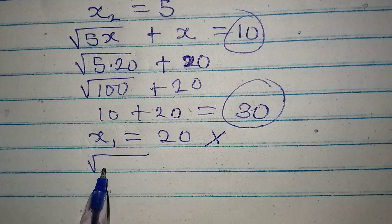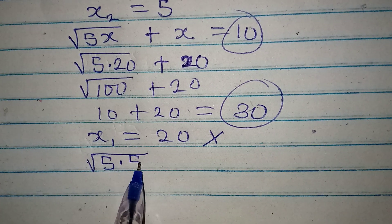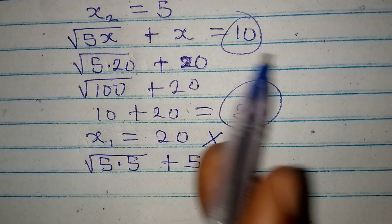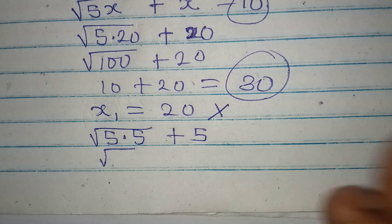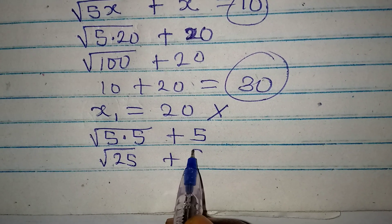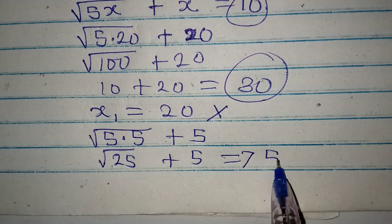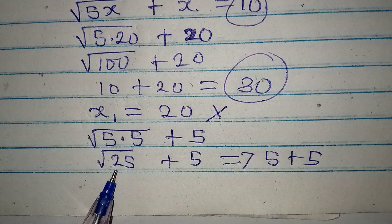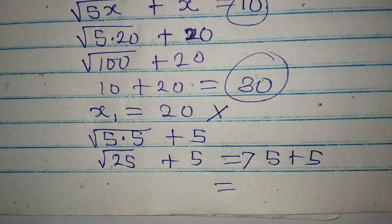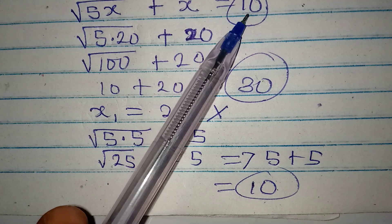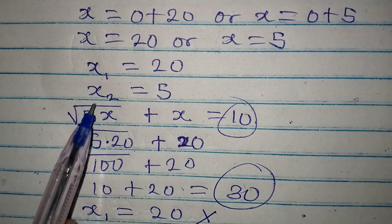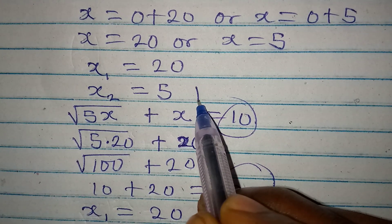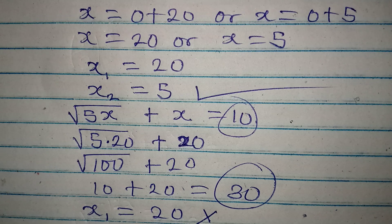Now try x₂ equals 5: square root of 5 times 5 plus 5, which is square root of 25 plus 5. Square root of 25 is 5, so this gives 5 plus 5 equals 10, and on the right-hand side we have 10. This checks out, so we conclude that x₂ equals 5 is the only value of x that satisfies the equation. Thank you for watching.